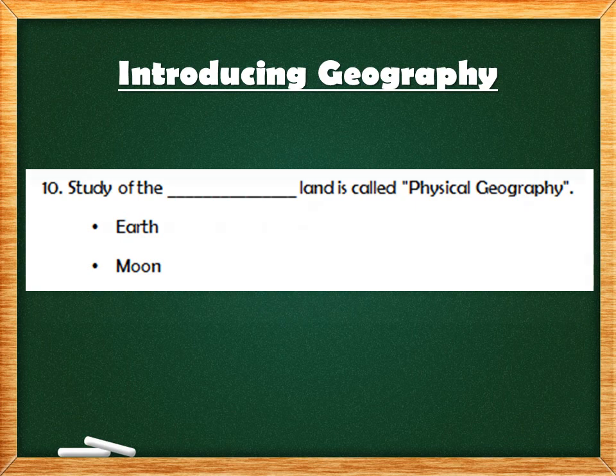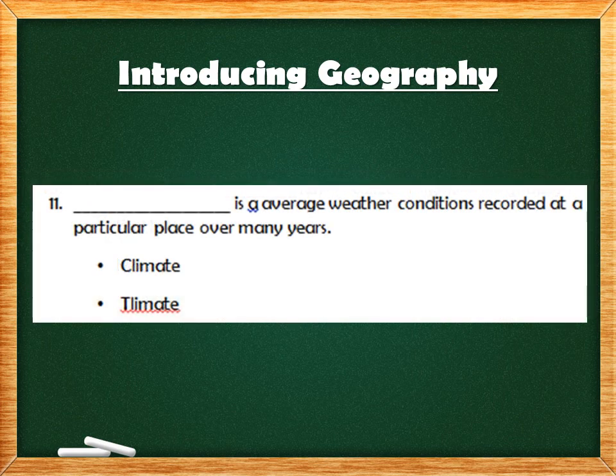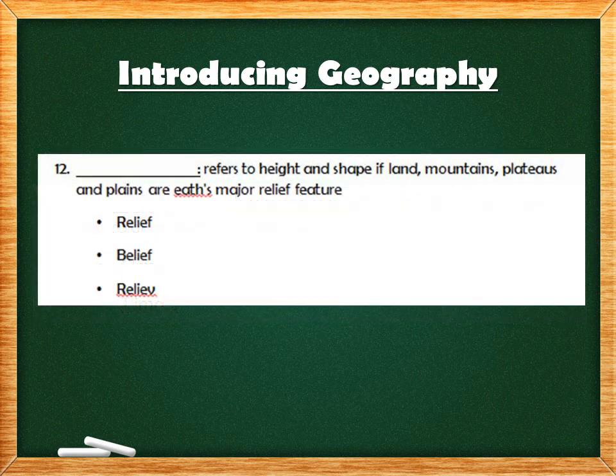Question 11: blank is the average weather conditions recorded at a particular place over many years — like 30 years. The answer is climate — C-L-I-M-A-T-E. Climate is the correct answer.